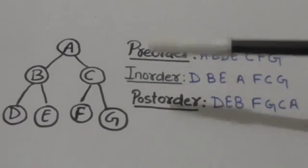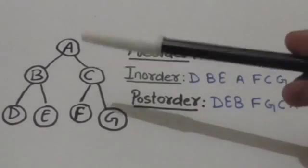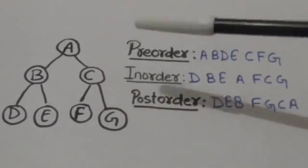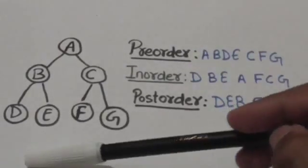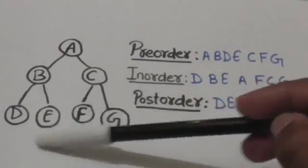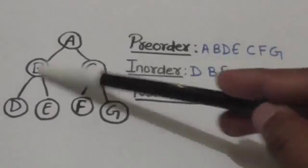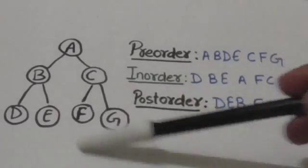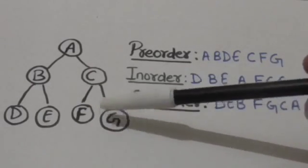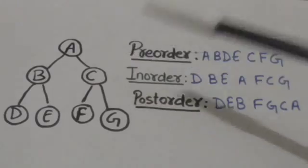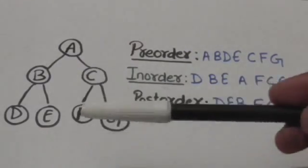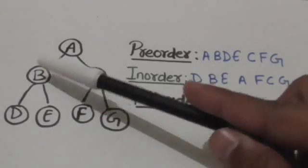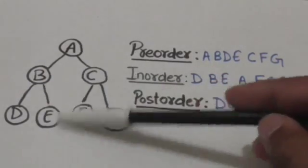Now see the in-order traversal of this binary tree T. Root of this binary tree T is A. First, the left subtree of root A will be traversed in in-order, then root A will be processed, and then the right subtree of root A will be traversed in in-order. So first we will traverse the left subtree of node A in in-order.